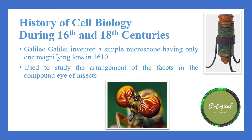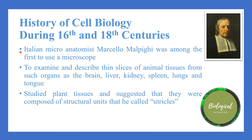The Italian micro-anatomist Marcello Malpighi was among the first to use a microscope to examine and describe thin slices of animal tissues from organs such as the brain, liver, kidney, spleen, lungs, and tongue. He also studied plant tissues and suggested they were composed of structural units, which he called utricles.